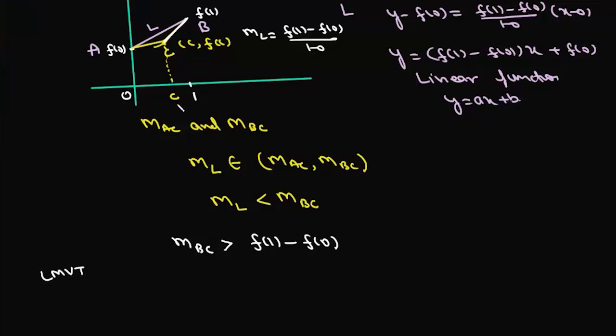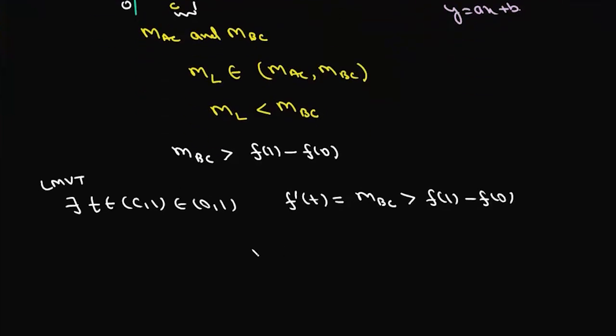Now slope of BC is the average slope between B and C. So using Lagrange's Mean Value Theorem in this interval between c and 1, we can say there exists a t in the interval (c, 1), which again lies in (0, 1), such that f'(t) is equal to the slope of BC. And the slope of BC is greater than f(1) - f(0). So from here we can say there exists a point t in the interval (0, 1) such that f'(t) is greater than f(1) - f(0).